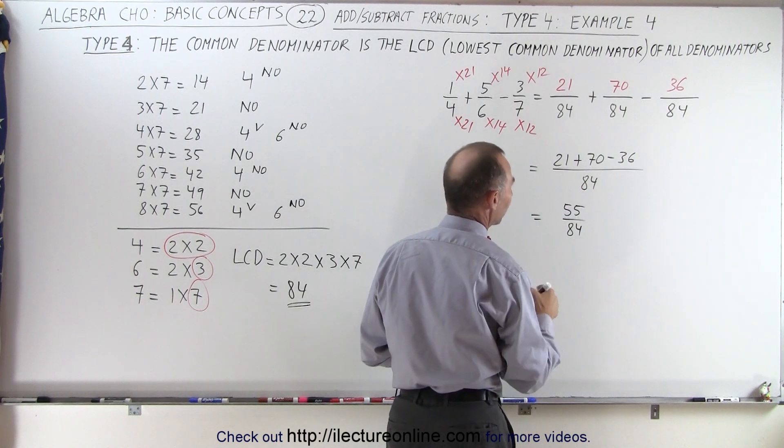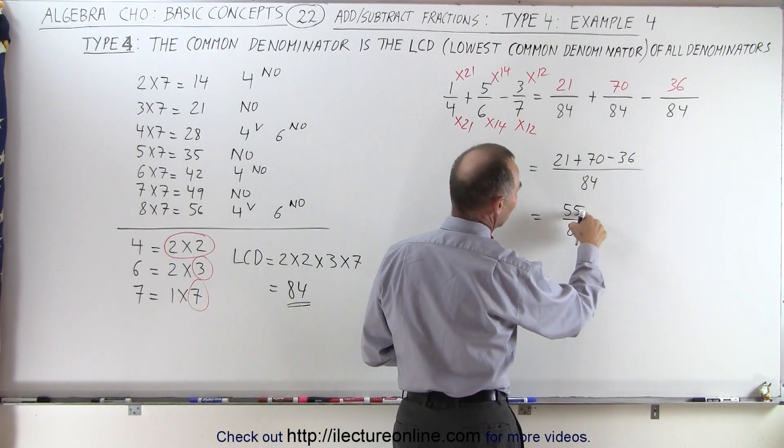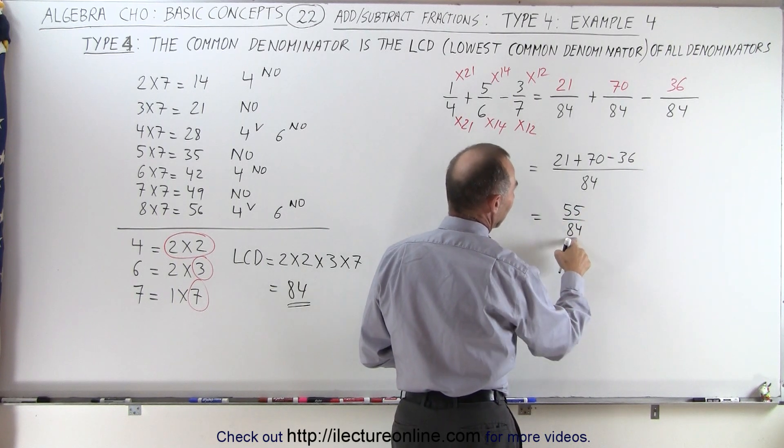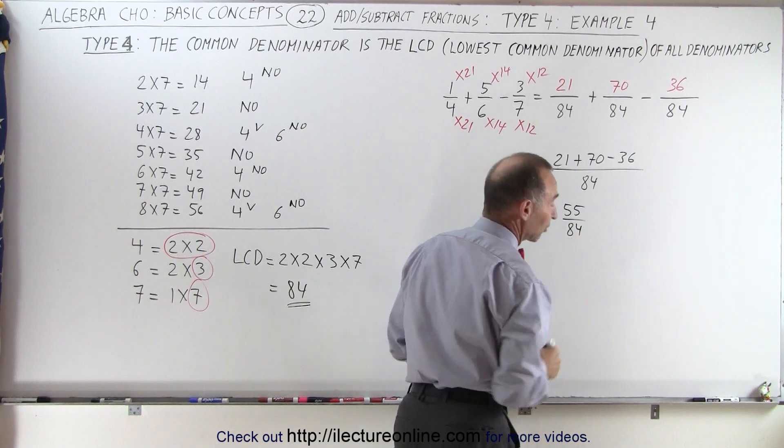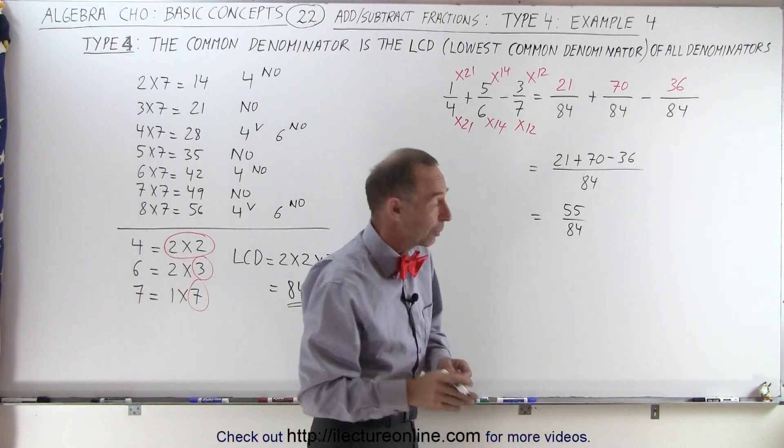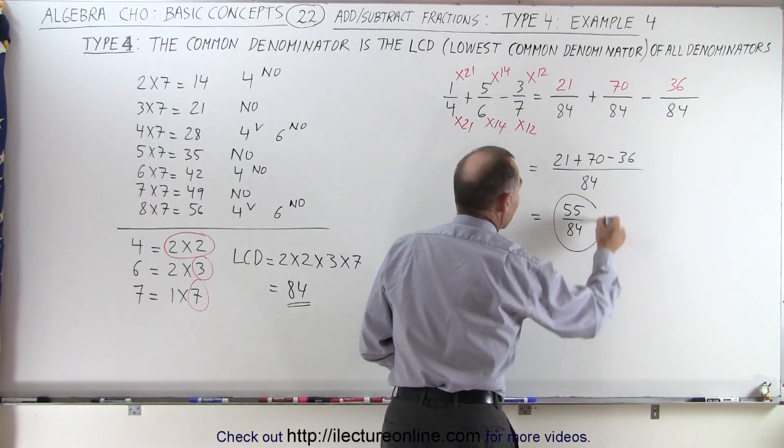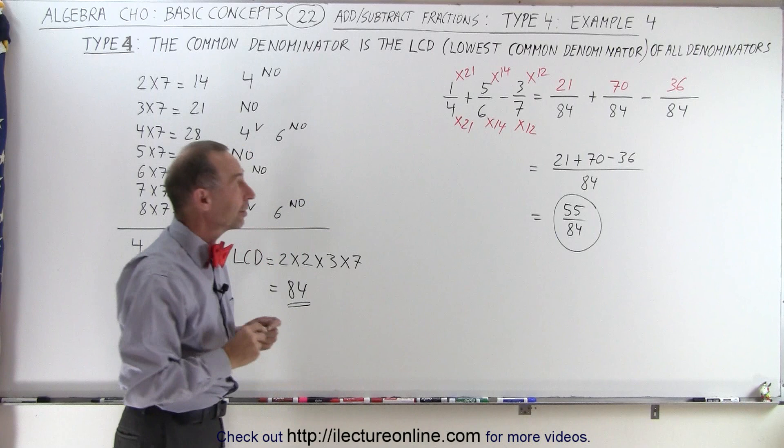55 is 5 times 11. 84 doesn't look like it has the factors 5 or 11 in it, so we can no longer reduce it. That means that this would be our final reduced answer.